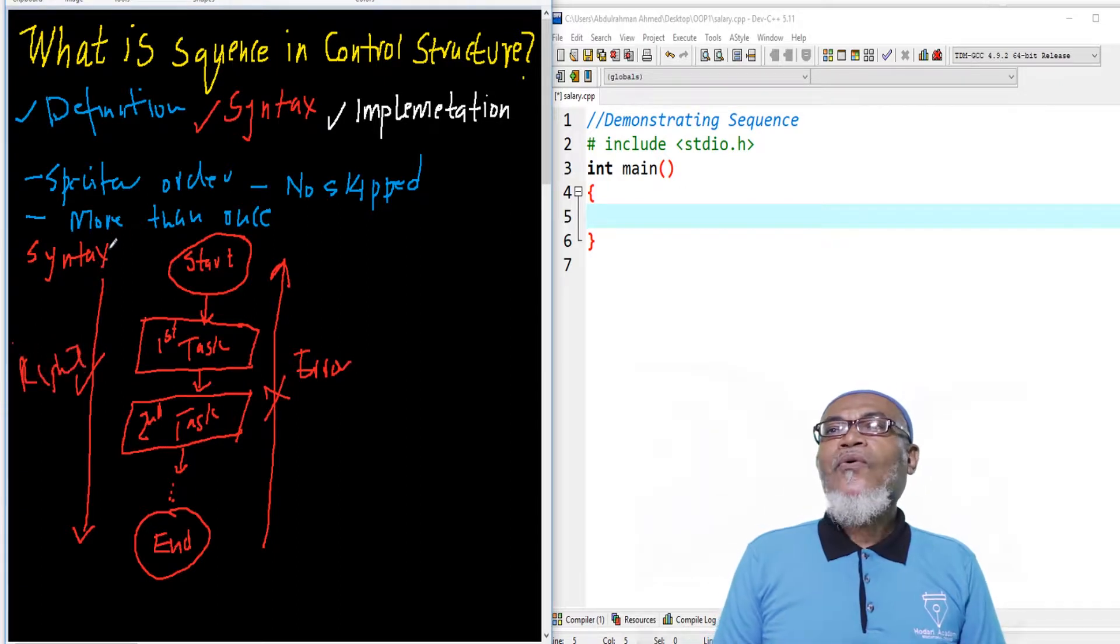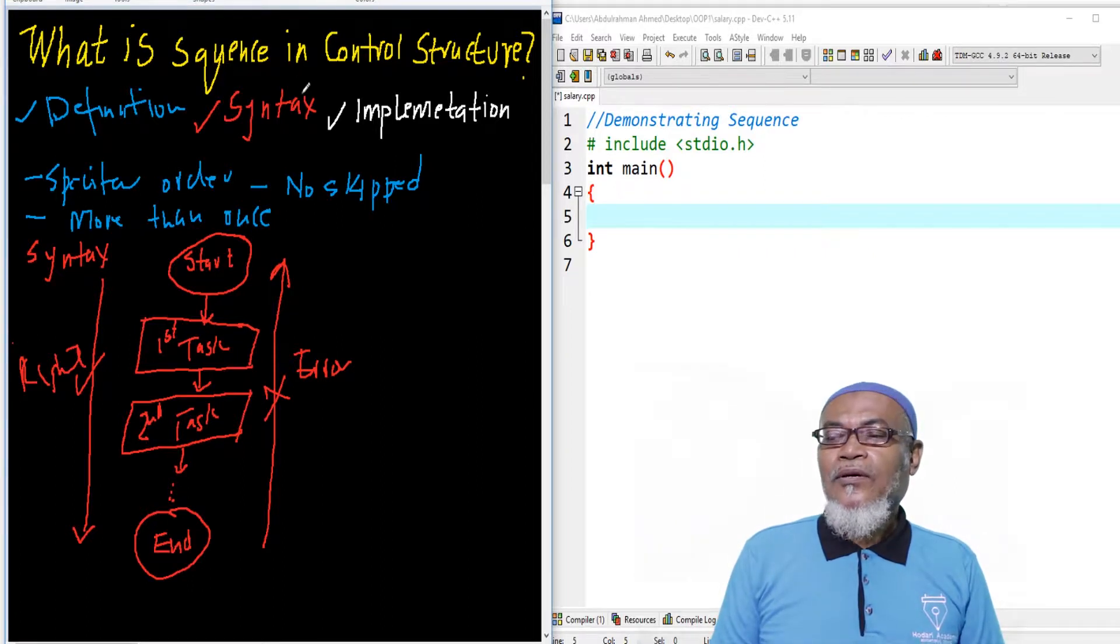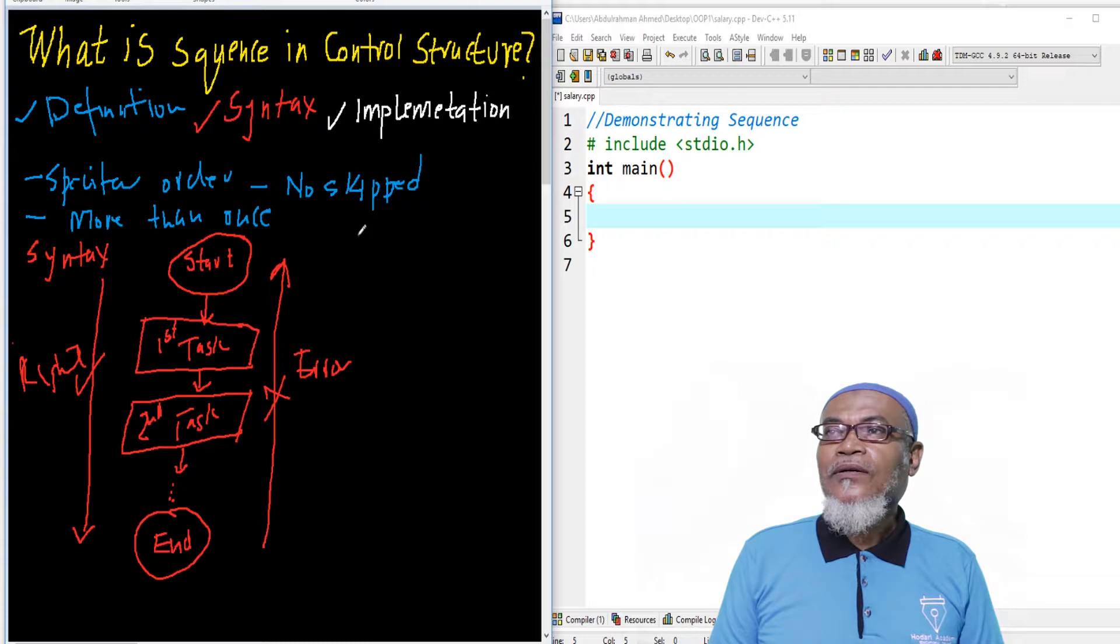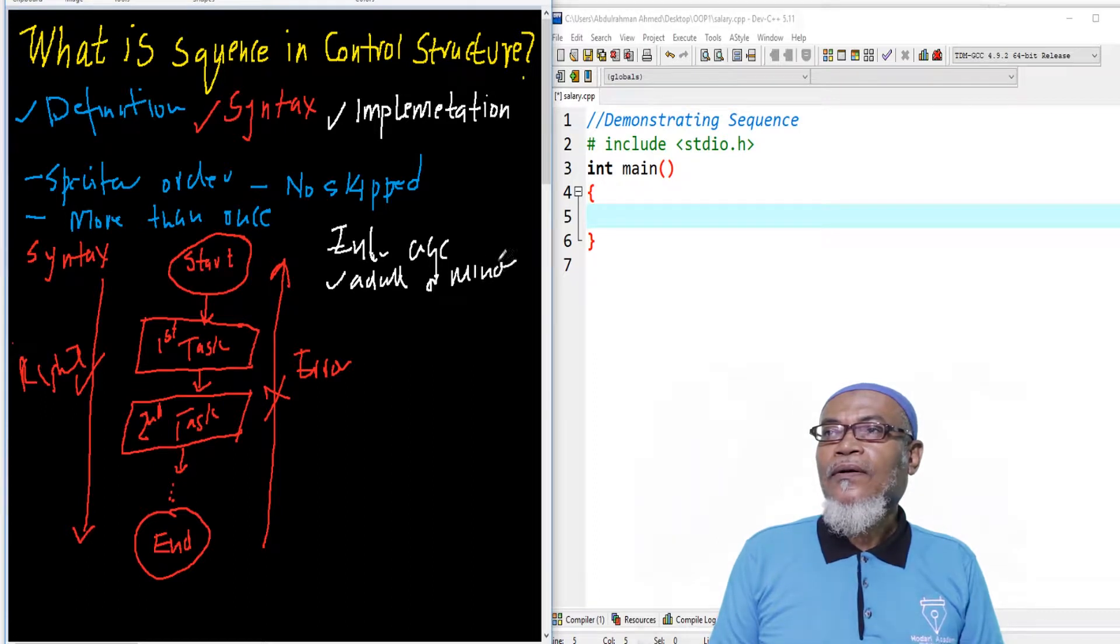So let's see how can we implement it into C programming. So basically, we are going to take, for example, ask a user to enter their age to find out if they are adults or they are minors. And onto that will follow a particular order or a sequence of order.